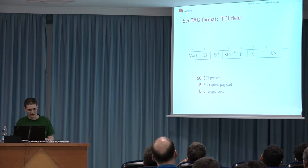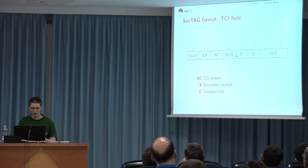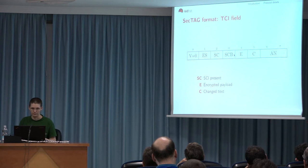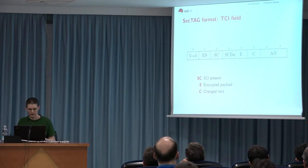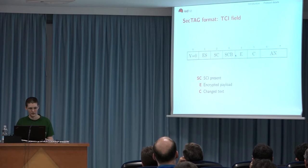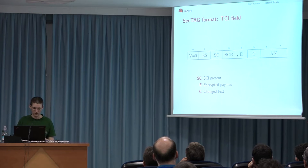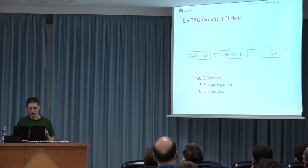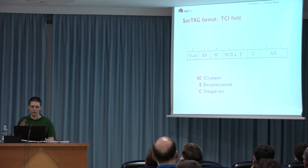The contents of the TCI have some really interesting parts. The SC bit indicates that the optional SCI was present. The E bit indicates whether or not the payload was encrypted. And the C bit tells you whether you can perform non-strict validation. Because you have optional parameters such as the ICV length, MACsec is configurable — if you don't use the default ICV length, you could not accept traffic that is not configured to match.